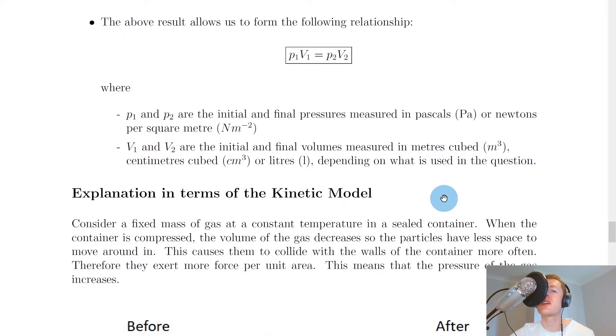Since pressure times volume equals a constant, we can introduce subscripts 1 and 2. If you have an initial pressure and volume of a gas and you change the volume, that consequently changes the pressure. To represent the initial and final pressures and volumes we need these little 1s and 2s. So we have P1V1 equals P2V2, where P1 and P2 are the initial and final pressures measured in pascals or newtons per square metre, and V1 and V2 are the initial and final volumes measured in metres cubed, centimetres cubed, or litres depending on what is used in the question. This is the equation related to Boyle's law that you can use to find an unknown variable.